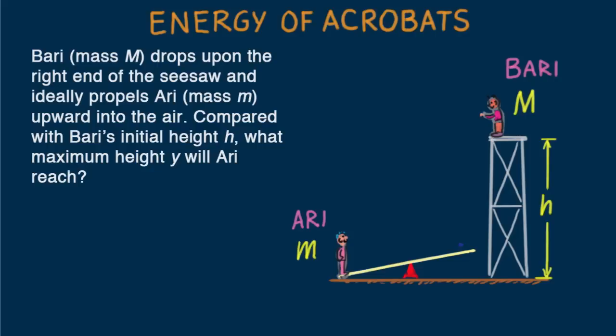Is this going to be a complex energy transfer problem? One where we'll have to find the velocity of Bari at the bottom of his jump from his acquired kinetic energy? And then do similarly for Ari as he acquires kinetic energy to propel himself upward? Is this one of those messy problems?